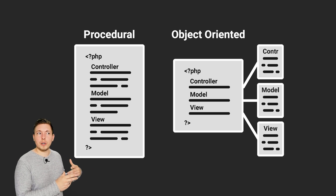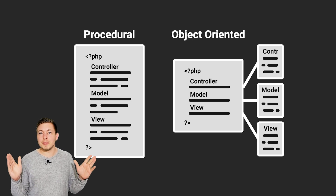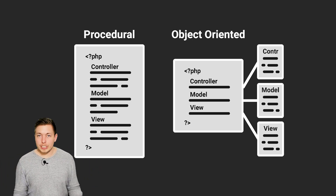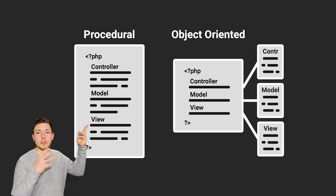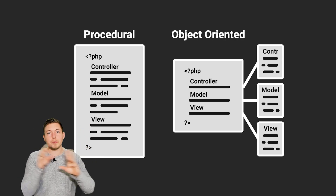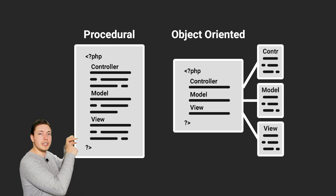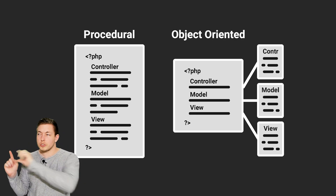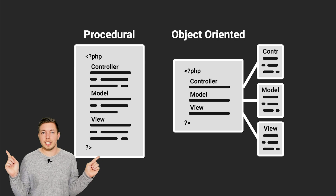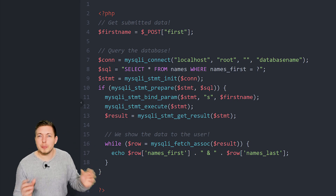We categorize these into different classes and use them independently, which makes it possible to reuse code. For example, if we want to show a list of names on one page and the same list on another page, the procedural way would require duplicating the code on both pages. In object-oriented PHP, we simply link to the code in our separate files, so we have the code in one place and just reference it instead.